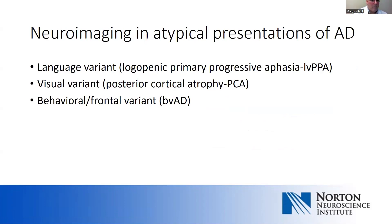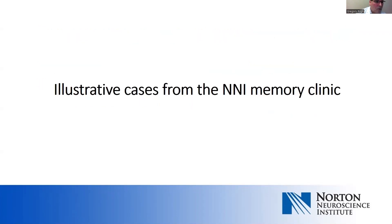Now we'll talk about neuroimaging and atypical presentations. Alzheimer's disease can have atypical presentations characterized as language variants, a visual variant, or a behavioral/frontal variant — logopenic primary progressive aphasia, posterior cortical atrophy, and behavioral variant of Alzheimer's disease. It's more likely we see these in younger patients, although they can present at any age. We'll show you a few cases that bring some of this to life.